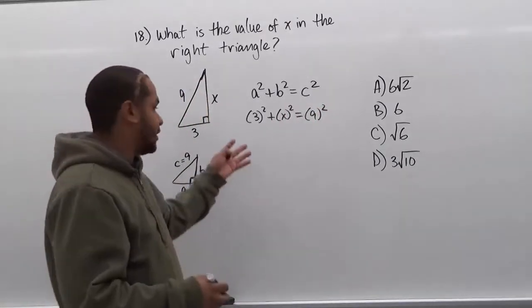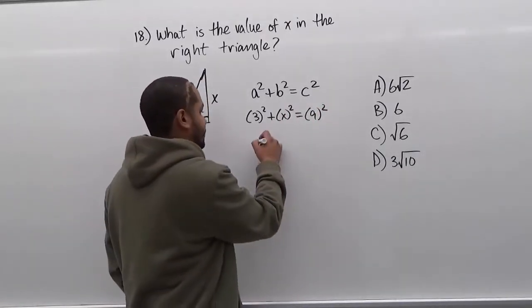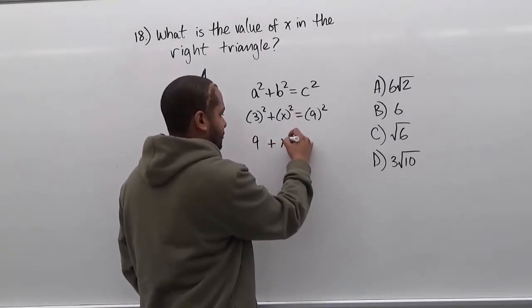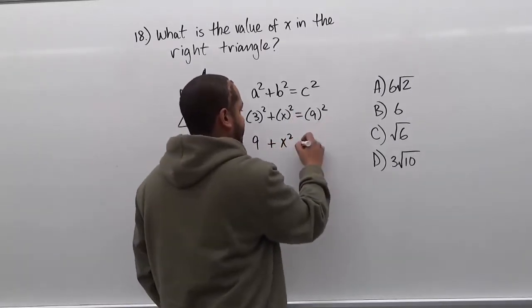Now the next step is to square every term. So we get 3² = 9, x² = x², and 9² = 81.